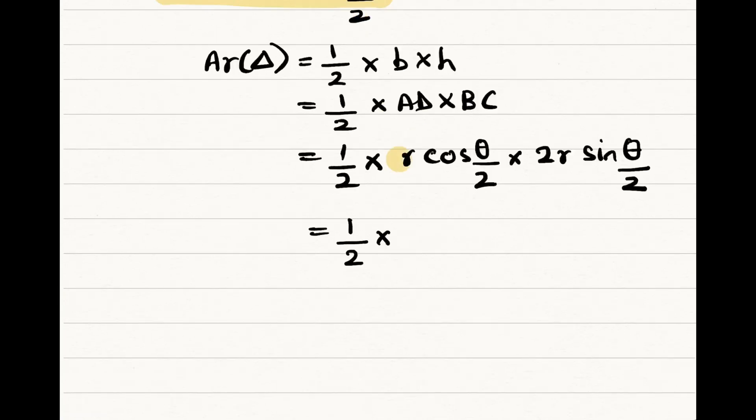We are taking r first and we have half into r square. Here, 2 sine theta by 2 into cos theta by 2.